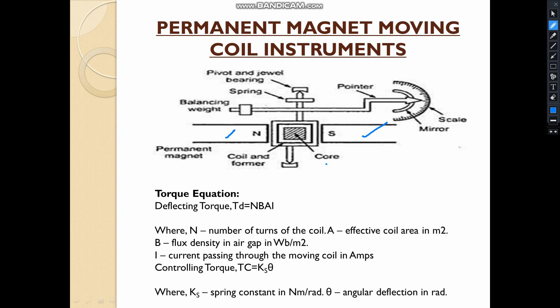The iron core is used to provide a low reluctance flux path so it can produce a strong magnetic field. That is why PMMC is used for the measurement of DC. The permanent magnet can be made up of alnico or alcomax — these are commonly used magnetic materials chosen based on whether you need low or higher field intensity. If you see in the diagram, there is a spindle — this central rod-like structure. We have air springs on either side of the spindle, and these air springs are made up of phosphor bronze.